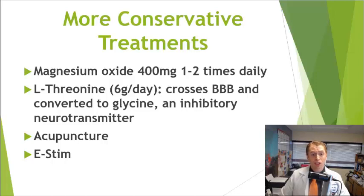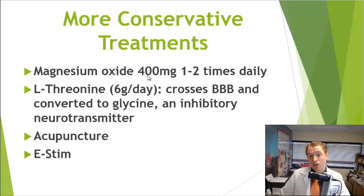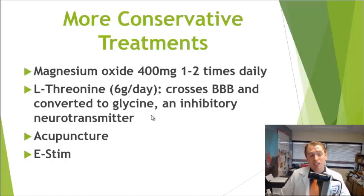There's some evidence for nutritional supplements in treating spasticity. Magnesium is a mineral which can stabilize the muscle membrane, and a typical dose of magnesium oxide is 400 mg once or twice a day. The amino acid L-threonine actually crosses the blood-brain barrier and is the precursor to glycine, an inhibitory neurotransmitter involved in regulating muscle tone. There's a study of 6 g a day shown to be beneficial in multiple sclerosis spasticity, though another study showed it was not effective — mixed data — though some patients found it modestly effective.